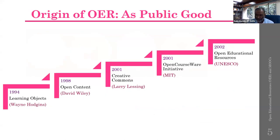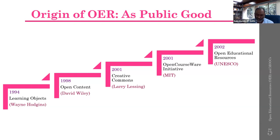Officially, the term 'Open Educational Resources' was coined in 2002, but some initiatives started earlier. In 1994, learning objects started appearing. In 1998, open content emerged. In 2001, Creative Commons started making its impact, and MIT — one of the top institutions in the world — began offering open coursewares. The term was formally introduced in 2002 by UNESCO, which became the flag bearer for Open Educational Resources.